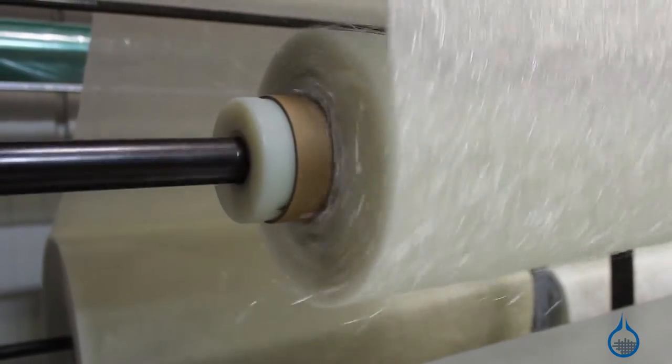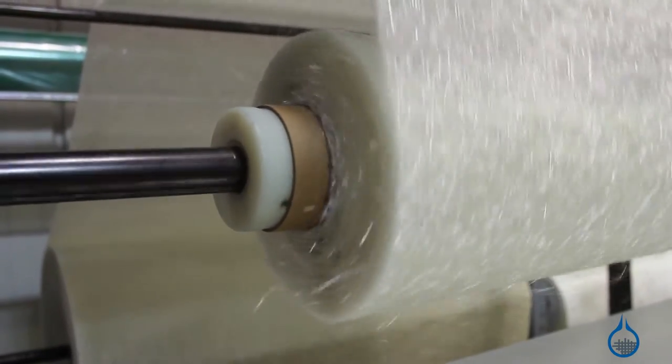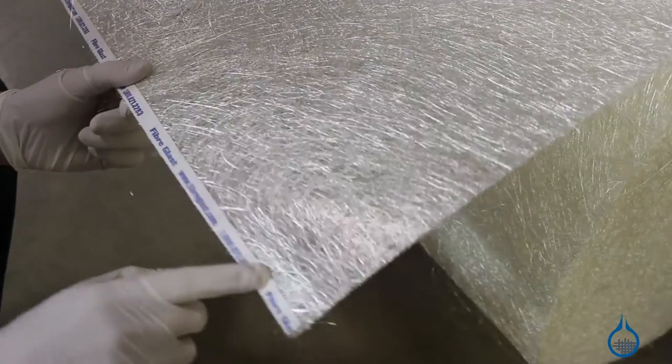When used with vacuum infusion, the continuous strands loop throughout the mat facilitate the flow of resin.